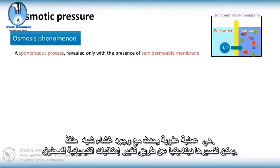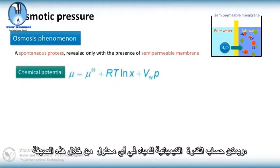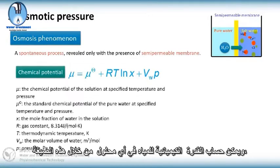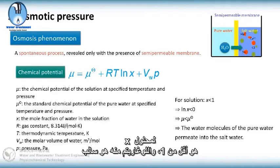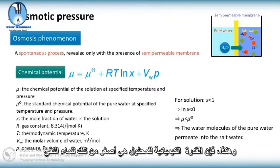It can be explained thermodynamically by the change of chemical potentials of solutions. The chemical potential of water in any solution can be calculated by a formula, where x is the mole fraction of water, T is the thermodynamic temperature, and P is the pressure. For a solution, x is less than 1 and its logarithm is negative. Thus, the chemical potential of a solution is smaller than that of pure water.